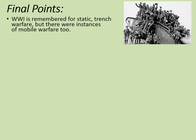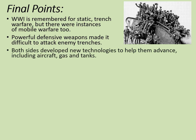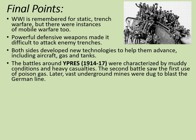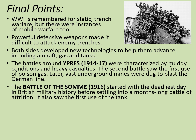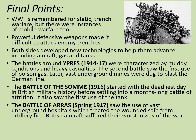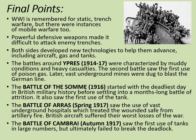To summarise: World War One is remembered for static trench warfare, but there were instances of mobile warfare too. Powerful defensive weapons made it difficult to attack enemy trenches, and both sides developed new technologies including aircraft, gas and tanks. The battles around Ypres between 1914 and 1918 were characterised by muddy conditions and heavy casualties — the Second Battle saw the first use of poison gas, and later vast underground mines were dug to blast the German line. The Battle of the Somme in 1916 started with the deadliest day in British military history and also saw the first use of the tank. The Battle of Arras saw vast underground hospitals treating the wounded safely from artillery fire, while British aircraft suffered their worst losses of the war. The Battle of Cambrai in autumn 1917 saw the first large-scale use of tanks but ultimately failed to break the deadlock; however, lessons learned helped the British break through in 1918.